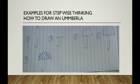Fourth step: inside that half circle I am drawing lines. Then move to the fifth step — again I am drawing lines inside that half circle, and now I am drawing a line on the top circle. Now I am drawing this in a step-by-step process. This is also one type of stepwise thinking — to draw an umbrella.